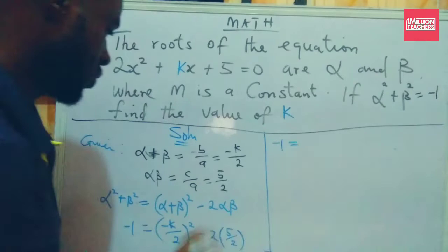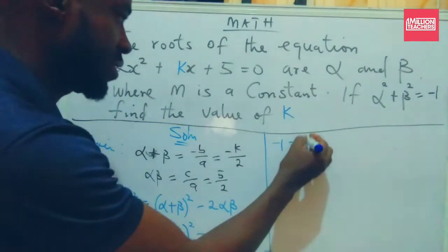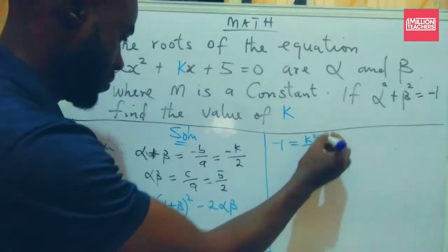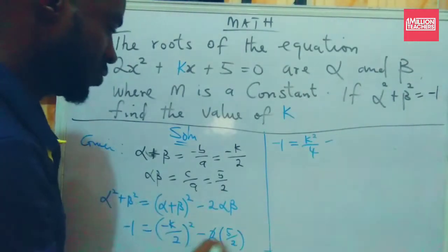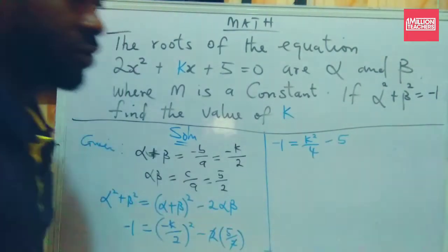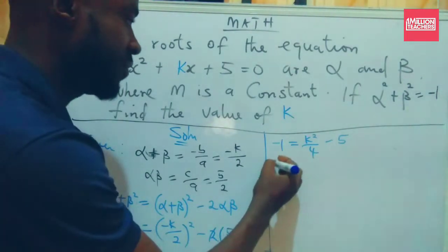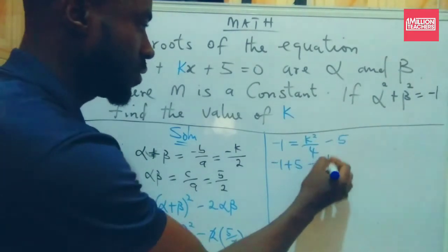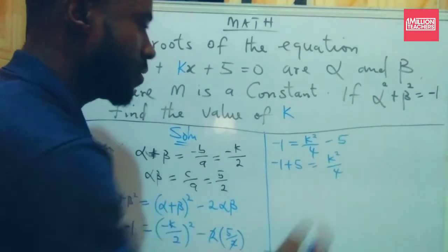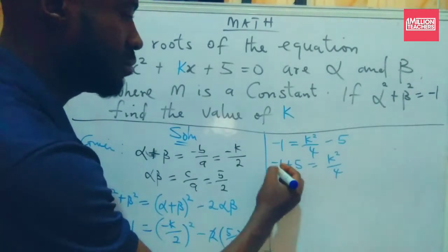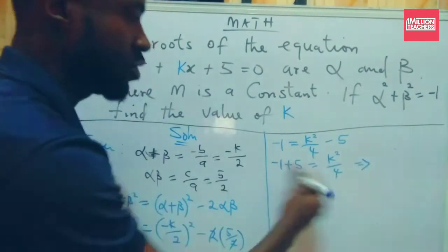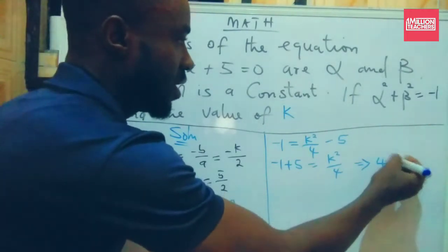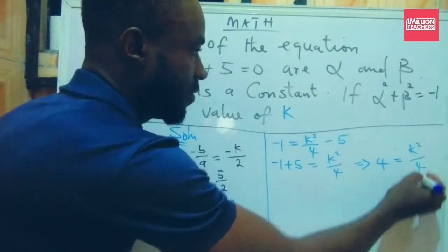So I have -1 = k²/4 - 5. If this -5 crosses over it becomes +5. So -1 + 5 = k²/4. -1 + 5 is 4, and we're having 4 = k²/4.